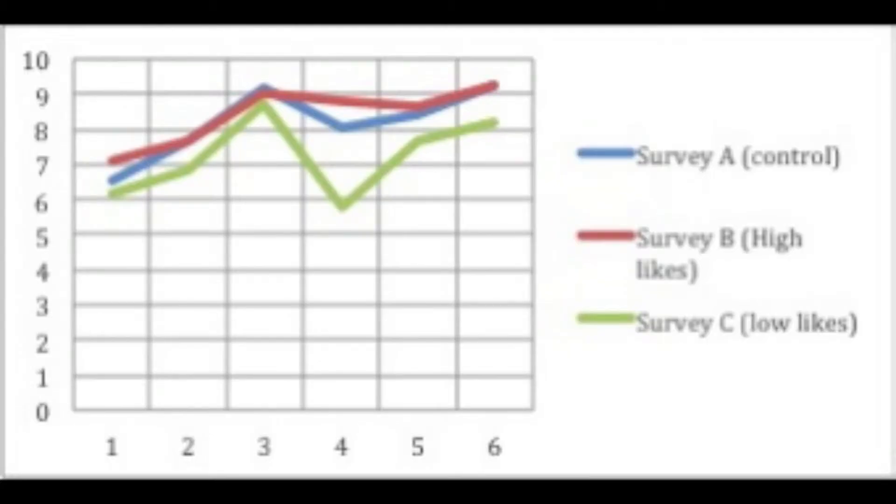This graph shows a general trend in the data from the survey answers. On the x-axis is the question number. On the y-axis is the average rating of perceived happiness. The control group is in blue. The survey with a high number of likes is in red. The survey with a low number of likes is shown in green. As you can see, there is a distinct trend in the data. However, I need to see if this trend is reliable and valid.